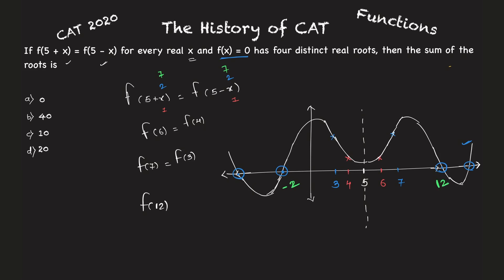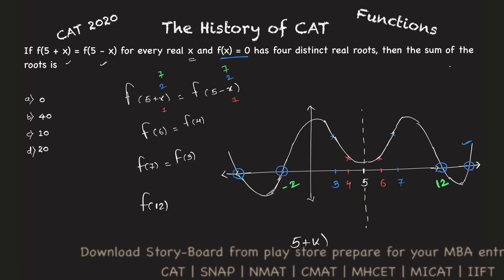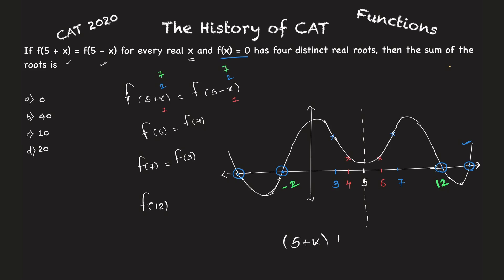Which means what? Anytime you add this, which is 5+k, let's say this is your one root, and the other root is 5-k, where k is any value. You can say one, two, three, seven, anything. Sum of these roots will be what? Anytime plus k and minus k will get cancelled. Sum of those roots is always 10.